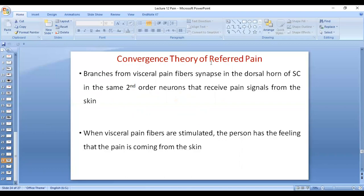Branches from visceral pain fibers synapse in the dorsal horn of spinal cord in the same second-order neuron that receive pain signals from the skin. So when the visceral pain fibers are stimulated, the person feels the pain in the skin.